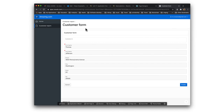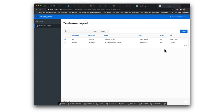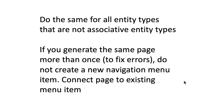Just to have some data, let's add one more customer instance. Enter some data, create, and now we have two customers. We want to repeat this above process for all entity types which are not associative entity types. So we'll have a page for customer, a page for product, and a page for sales order. Sales order will come later because it's connected with an associative entity type. Product category and others — you will create these.